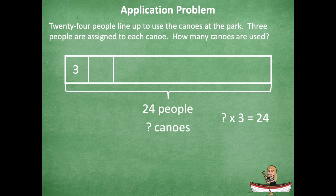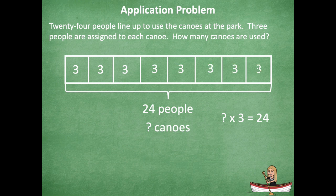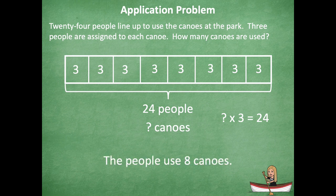So I would go three, six, nine, 12, 15, 18, 21, 24. So I don't need any more groups. So the people use eight groups or eight canoes because I have eight groups on my tape diagram.